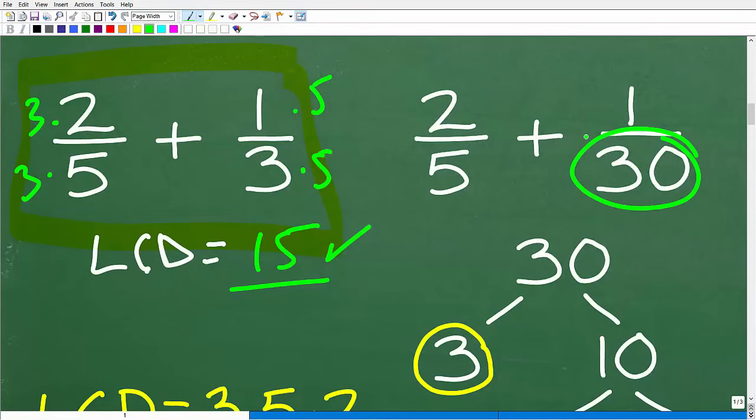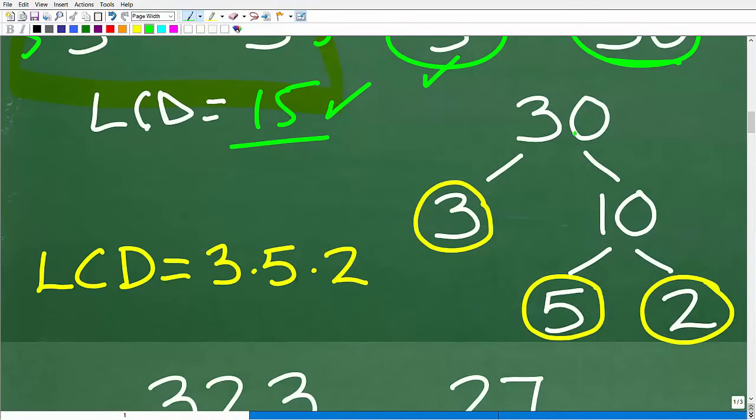So in this case, we need to prime factor both 5 and 30. Well, 5 is already fully factored into its prime form. 1 times 5 is 5. But here, 30 is not. So we would have to factor 30 out. So 30 is the same thing as 3 times 10. 3 is prime. 10 is not. So we're just making a little factor tree here. So 10 is the same thing as 5 times 2.